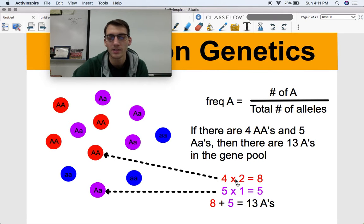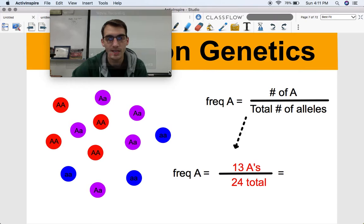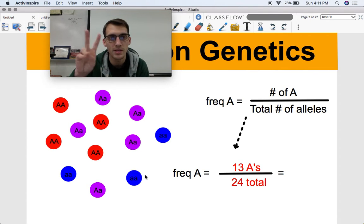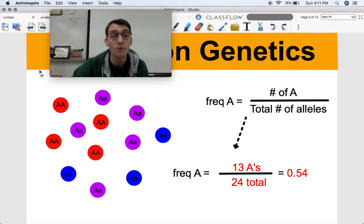So just to double check our calculations here and make sure we're not off, if there's 13, let's count, 1, 2, 3, 4, 5, 6, 7, 8, 9, 10, 11, 12, 13, total dominant alleles in this gene pool. So we got 13 big A's, we got 13 dominant alleles, we have 24 total because there's 12 individuals and they each have two alleles, 13 divided by 24 is 0.54, 54%. That means 54% of the gene pool is dominant in this population of blobs.